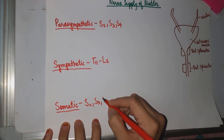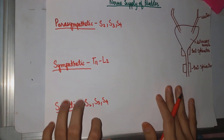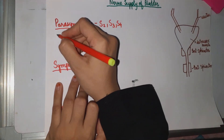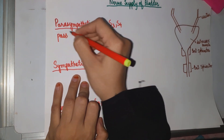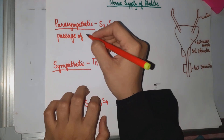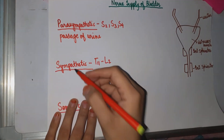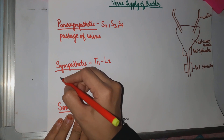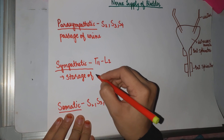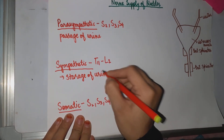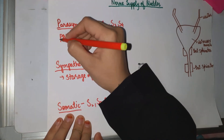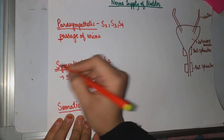Parasympathetic helps in the passage of urine, and sympathetic helps in the storage of urine. We can remember it this way: parasympathetic has 'P' and passage of urine has 'P'; sympathetic has 'S' and storage of urine has 'S'.